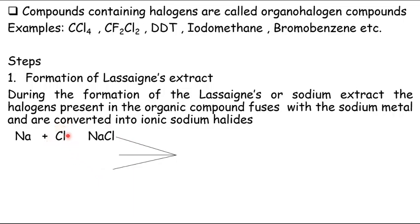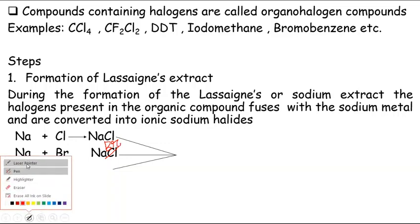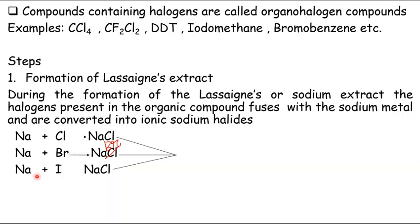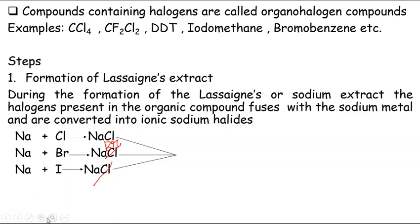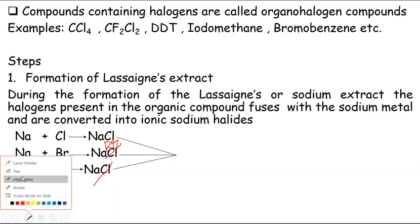If we have a chlorine-containing organic compound, then it will become sodium chloride. If the organic compound contains bromine, it will become sodium bromide. If the organic compound contains iodine, it will become sodium iodide.